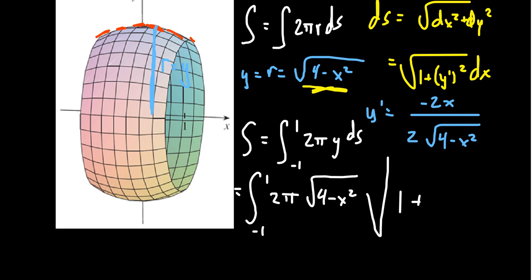2 cancels out there. You have a negative sign. And this is what we need to square. So we're going to square that. We're going to get an x squared on top. And then when you square the square root, you get a 4 minus x squared on the bottom. This is what we get right here.